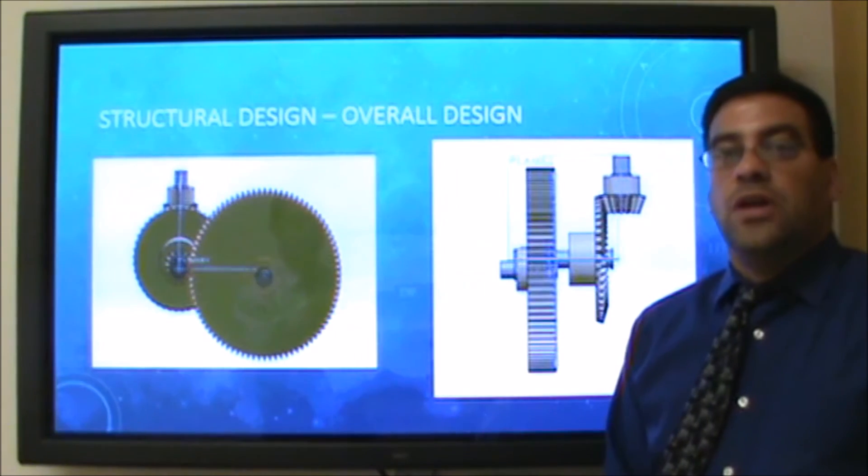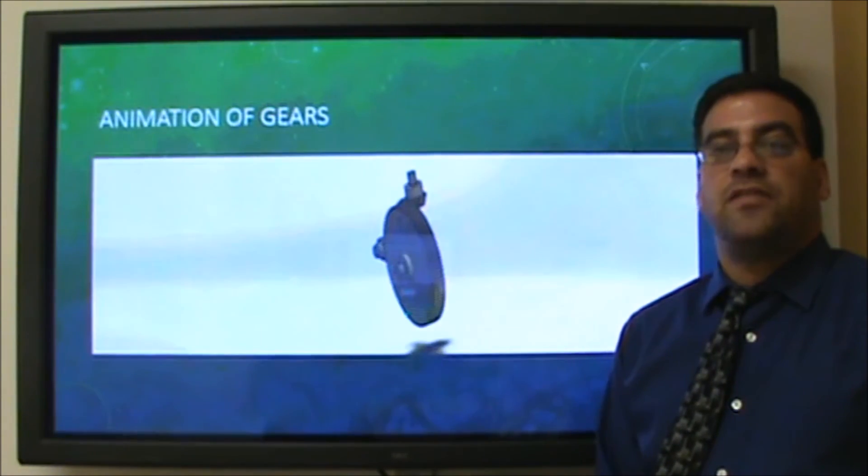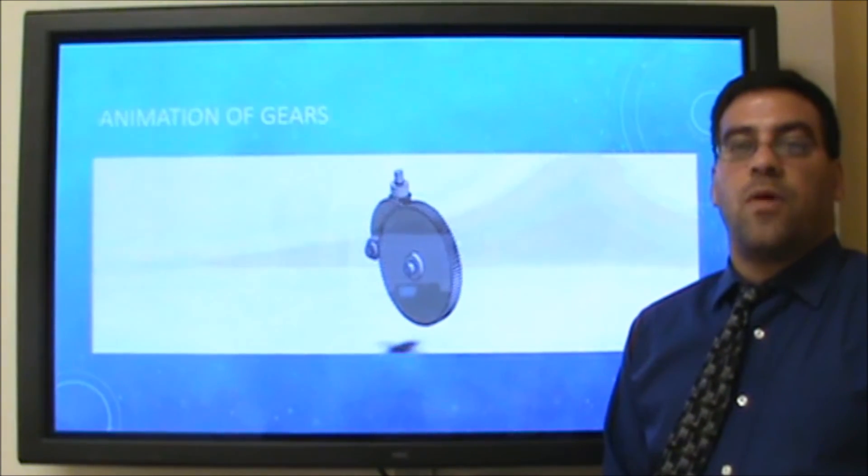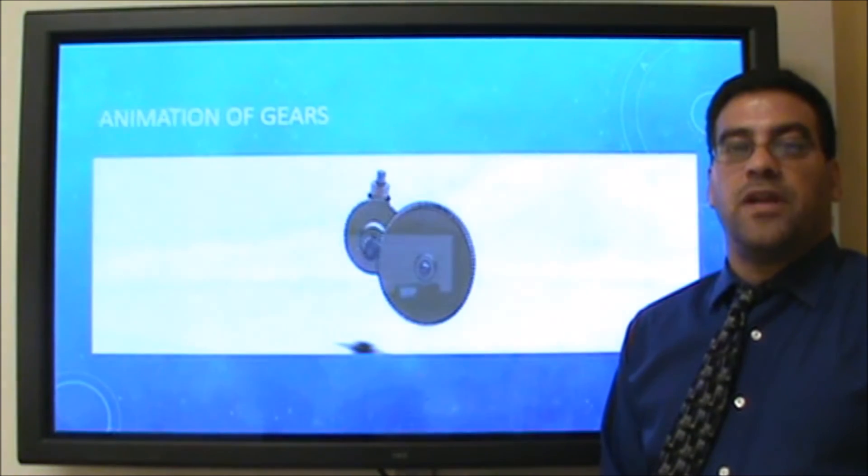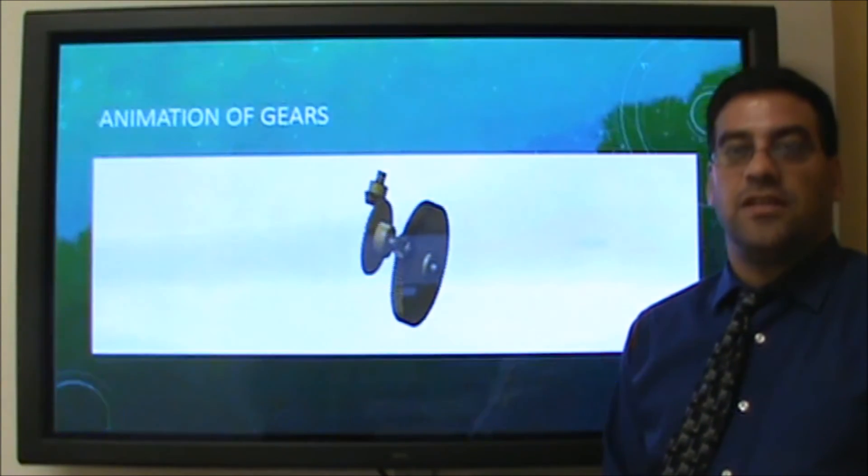Our final reduction design is 18 to 1 with two gear set combinations, bringing our initial rotation speed from 1620 to 90 RPM as required. Both input and output gears turn in a counterclockwise direction to help keep the orientation in the same direction.